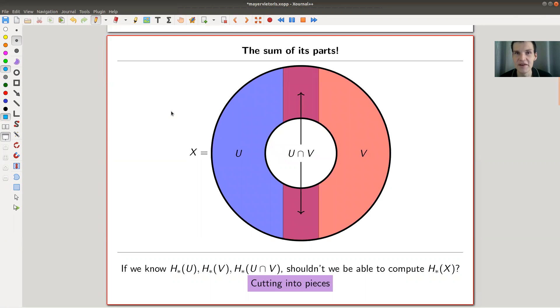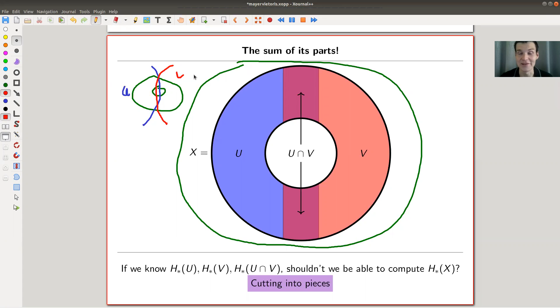So the sum of its parts. Whenever you have a topological space, you should think there should be some cut and paste procedure. If I have a space X, which in this case is just a disk with a hole, but of course it can be any space, and you cut it into a blue part U and a red part V, there's some intersection, and of course you want some mild overlap.